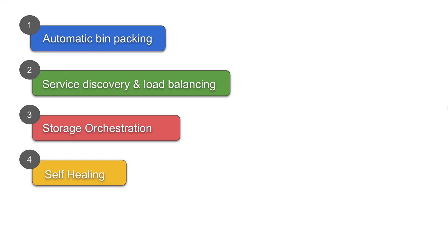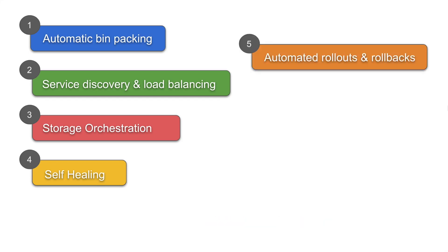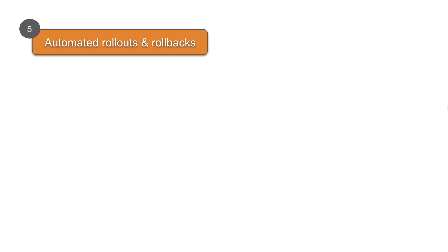These are the four features we covered in part one. Just in case you have not watched part one of this session, I request you to watch that first and then we will start with feature number five: automated rollouts and rollbacks.